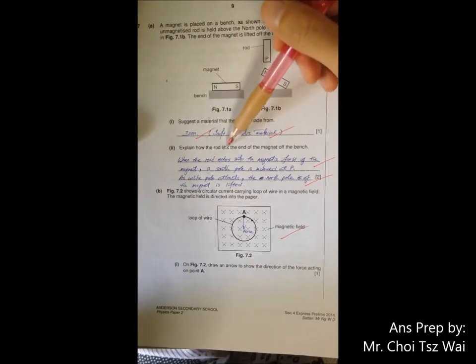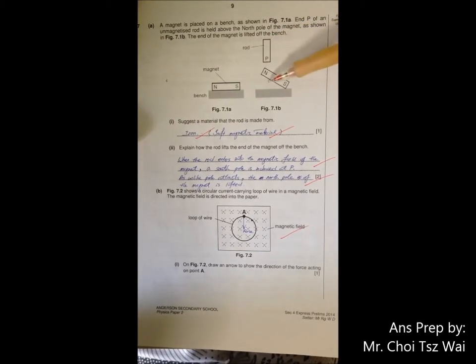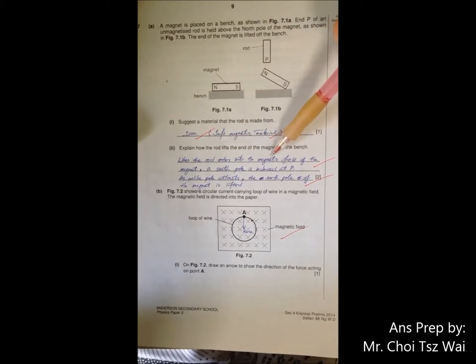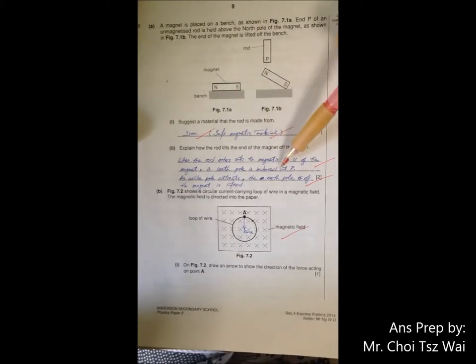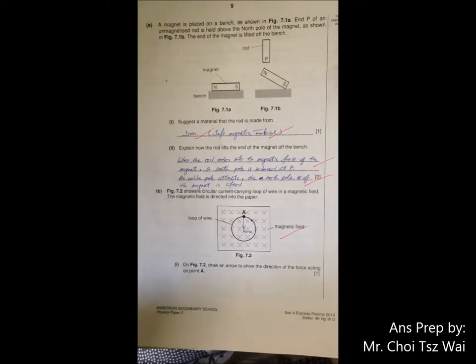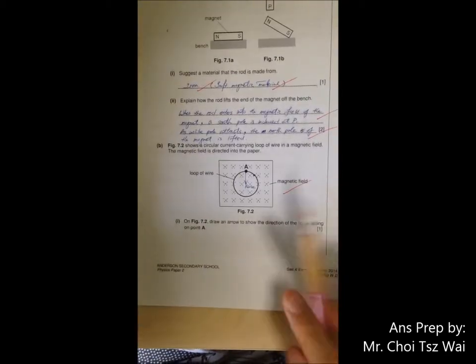So explain how the rod gets lifted up. Remember to mention that it is only when this rod enters the magnetic field from the magnetic field of this magnet, then the south pole will be induced here. Highlight that only when the rod enters into the magnetic field of the magnet, then a south pole is induced at P, and because unlike poles attract, the north pole of the magnet will be lifted.